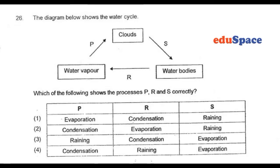In question 26, we have a water cycle. So which of the following shows the processes P, Q, R, and S correctly?